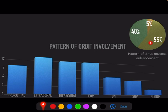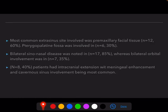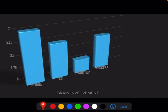55% of patients had heterogeneous sinus mucosal involvement, while 40% had the black turbinate sign. In orbital involvement, the extraconal compartment was most commonly involved and globe deformity was seen in the fewest patients. The most common extrasinus site was premaxillary facial tissue, seen in 60% of patients, and pterygopalatine fossa involvement was seen in 30%. Bilateral sinonasal disease was noted in 85% of patients, while bilateral orbital disease was seen in only 35%. 40% of patients had intracranial extension, with meningeal enhancement being most common, followed by cavernous sinus involvement and intracranial abscesses.